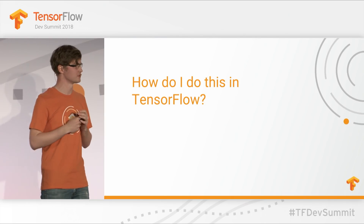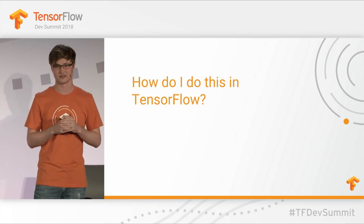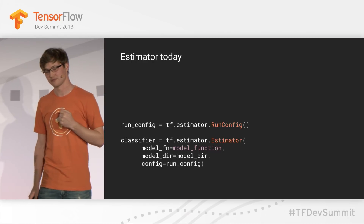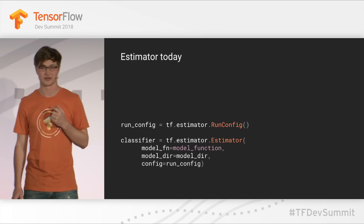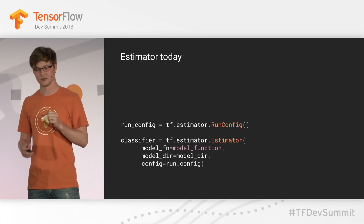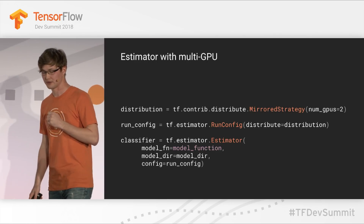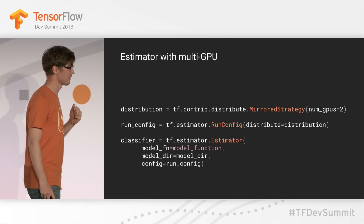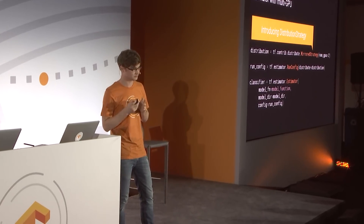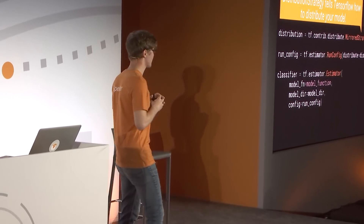How could you use all-reduce in TensorFlow? So far I've told you that to take advantage of multiple GPUs, you need to write additional code, change your model, and learn stuff. But chances are you're following the advice of using the highest-level API that works for your use case — that's probably Estimator. With Estimator, your model is specified by the model function and has no knowledge of GPUs or devices. So to have that model use multiple GPUs, you just need to add one line: pass an instance of a new class called MirrorStrategy, which is one implementation of our new Distribution Strategy API.